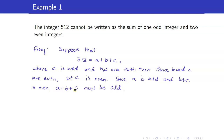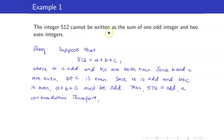However, A + B + C is 512. Thus, 512 is odd. And this is your contradiction, because 512 is even. Therefore, 512 cannot be written as the sum of one odd integer and two even integers.